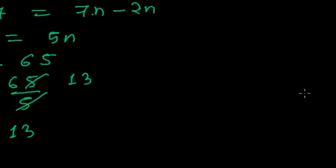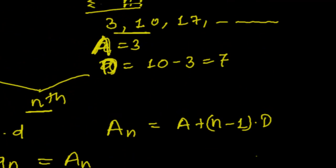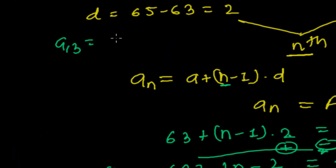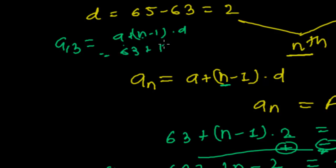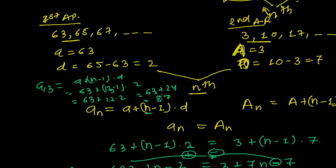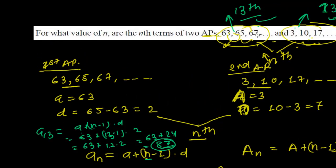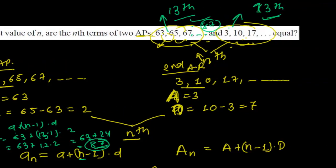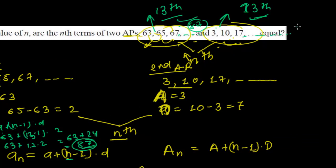If you also want to find the actual value of that term, just substitute N = 13 into the formula. For the first AP: A₁₃ = 63 + (13 − 1) × 2 = 63 + 12 × 2 = 63 + 24 = 87. You can verify with the second AP as well — the 13th term there is also 87. So the 13th terms of both APs are equal, and that common value is 87.